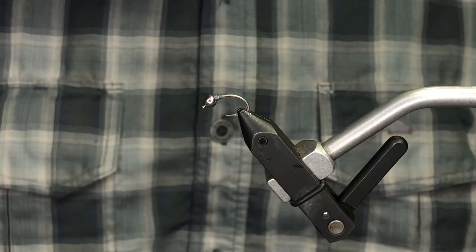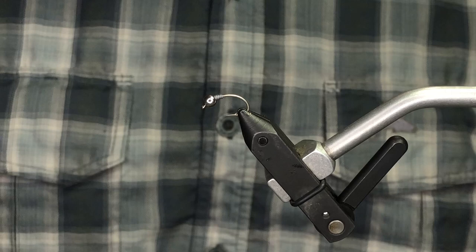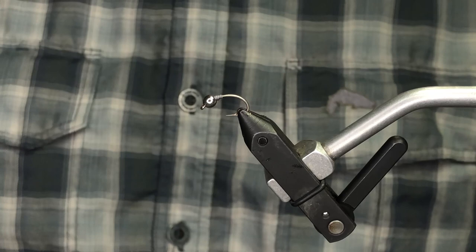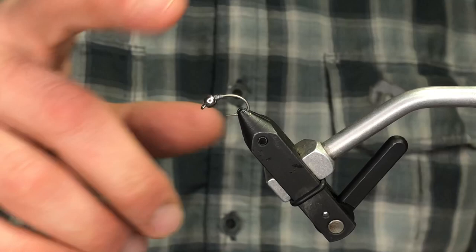Hey everyone, thanks for tuning in tonight. We're going to tie a classic Prince Nymph with a bit of a twist. We're going to use wire as the main body instead of just some peacock herl. It's going to be kind of a half Prince Nymph, half Copper John, and we're going to play with some fun colors for steelhead.